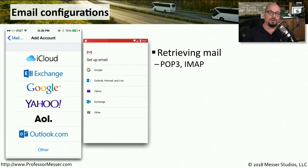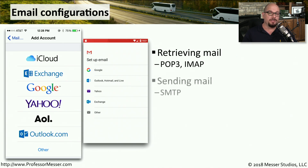Many of us use our smartphones and tablets to send and receive emails. In order to do this, we have to configure these devices with the appropriate email settings for the type of service we're using. If you're retrieving emails from an internet service provider's email server, you're probably using the POP3 protocol or the IMAP protocol. If you're sending mail from this device, you're probably using the SMTP protocol for that particular ISP's network.